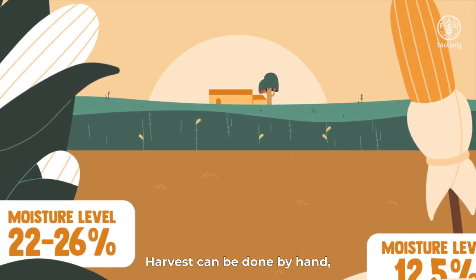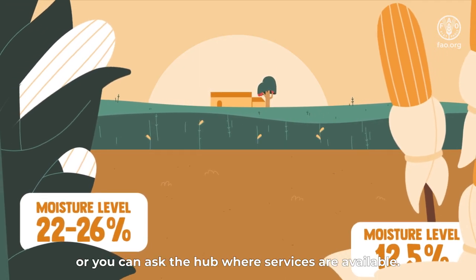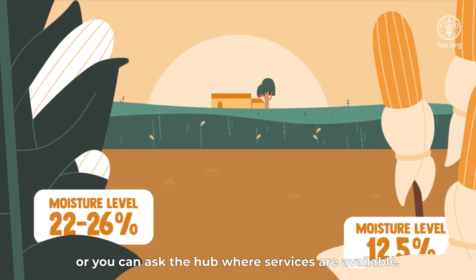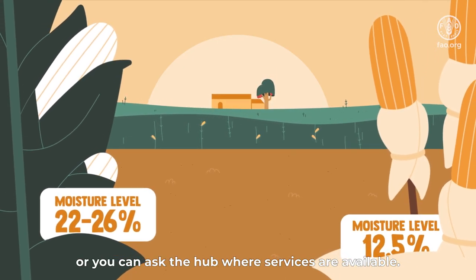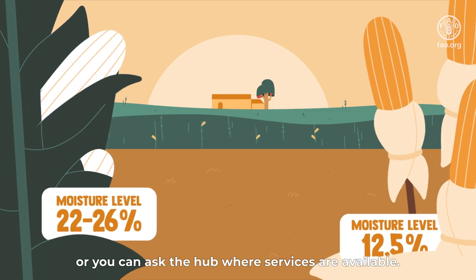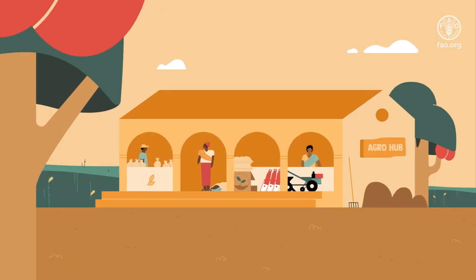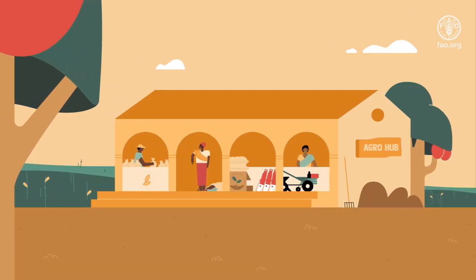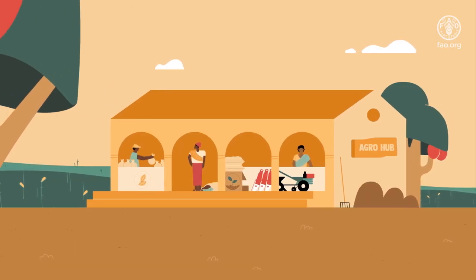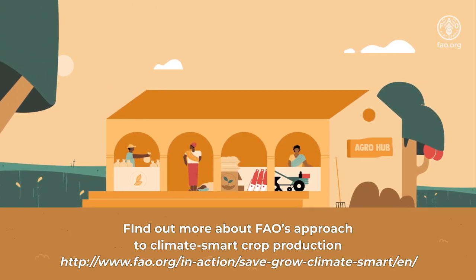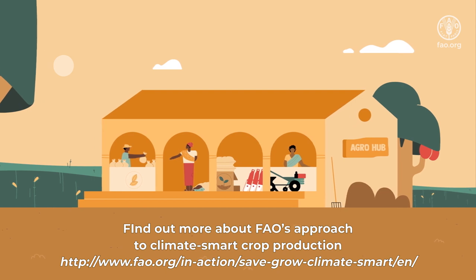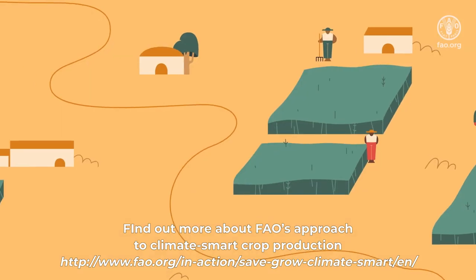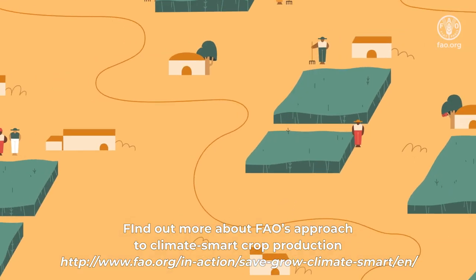Harvest can be done by hand or you can ask the hub where services are available. Find out more about FAO's approach to climate smart crop production.